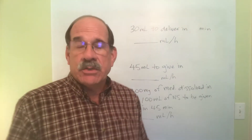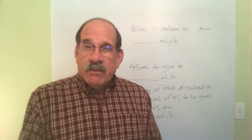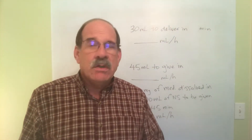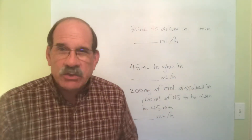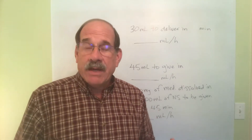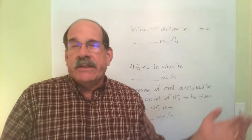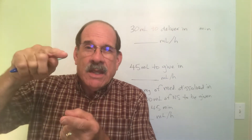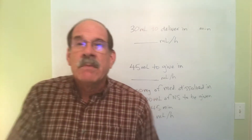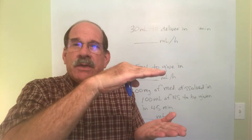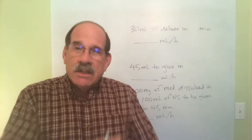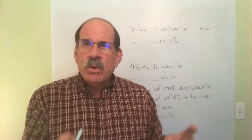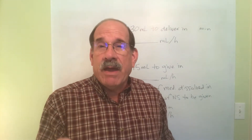Continuing on with intravenous administration using a machine — you need to find milliliters per hour. There are all kinds of infusion pumps and controllers. One kind I want to reference is a syringe pump, used when there's a fairly small amount of liquid — maybe up to 60 or 100 milliliters. A big syringe goes into the machine, and the machine slowly pushes the plunger down, giving the patient the medication through the IV.